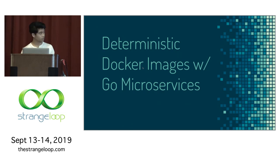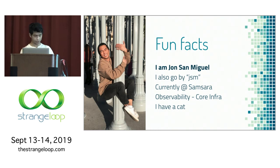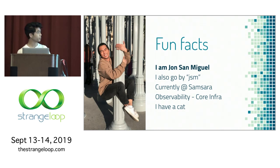Some fun facts. My name is John San Miguel — I also go by JSM. I'm on the Strange Loop Slack if you want to find me after. I'm currently working at Samsara as part of our core infrastructure team, working on observability right now.